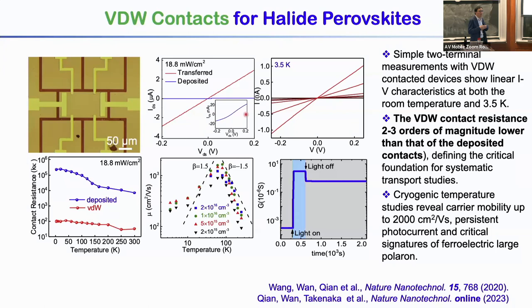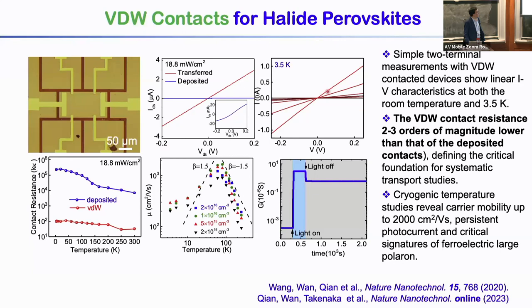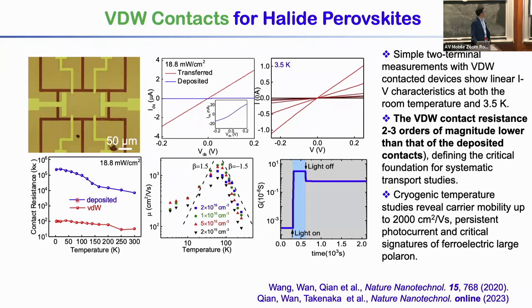On the other hand, if we use van der Waals transfer and then peel it off — because of weak bonding we can easily peel it — after peeling, the PL imaging shows really no difference between the area with the electrode and without the electrode. We further transfer the whole device structure to do electric transport studies. There is a very clear difference: under the same conditions, with the van der Waals contact versus a typical deposited contact, the current differs by two to three orders of magnitude. Basically, with a deposited contact, everything we measure is the contact resistance rather than intrinsic properties. The van der Waals contact maintains linear behavior down to cryogenic temperature.